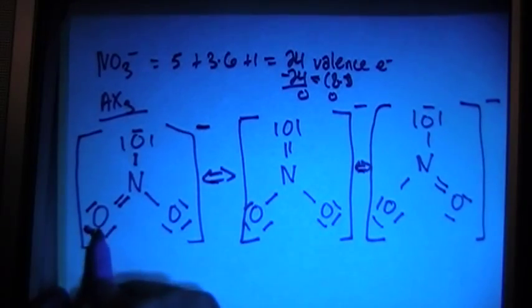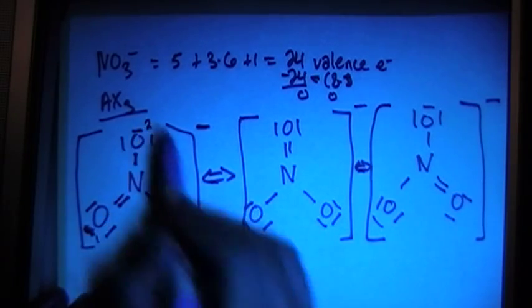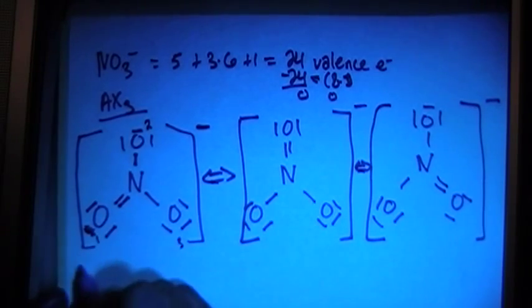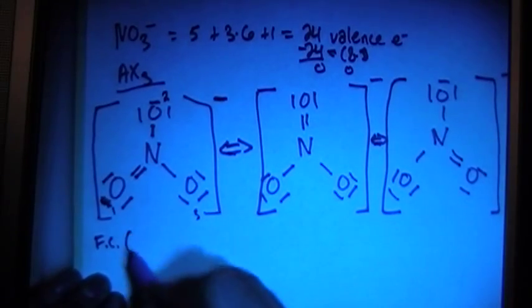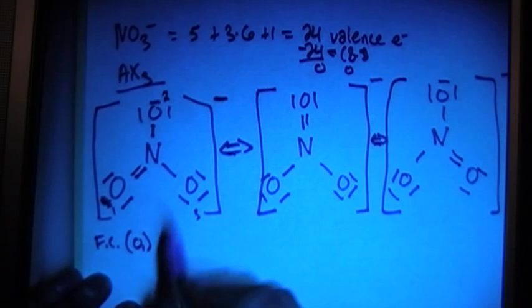We're going to call this one, this oxygen here, oxygen one. This is oxygen two, and this is oxygen three. So the formal charge for oxygen one is going to be...